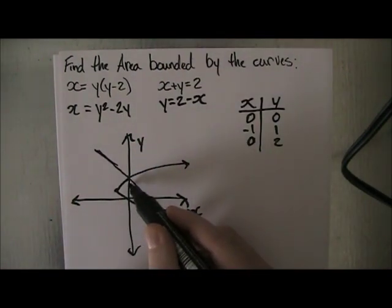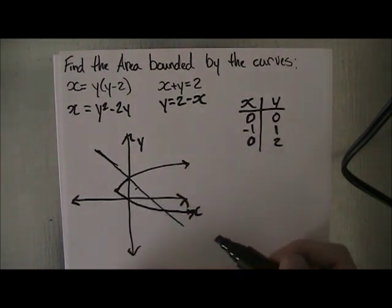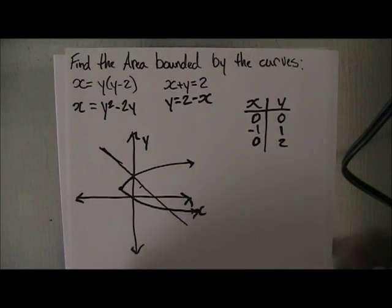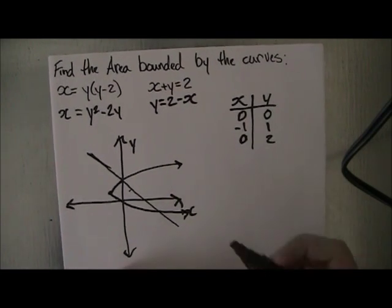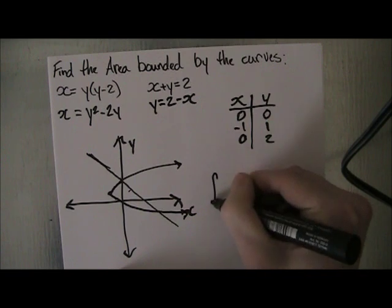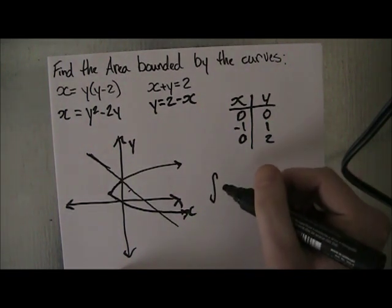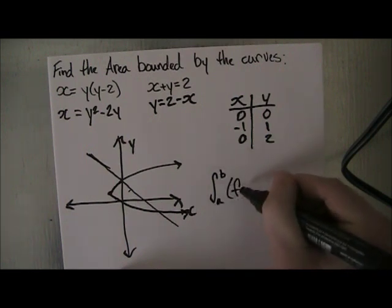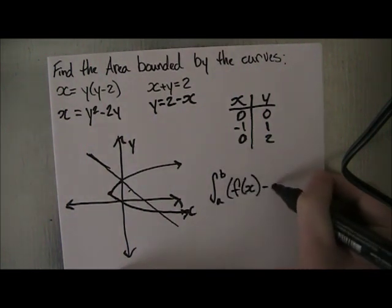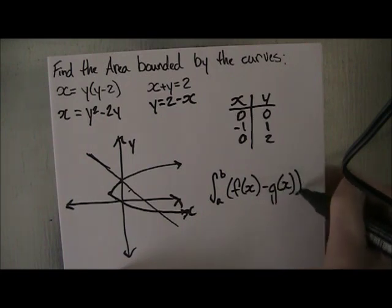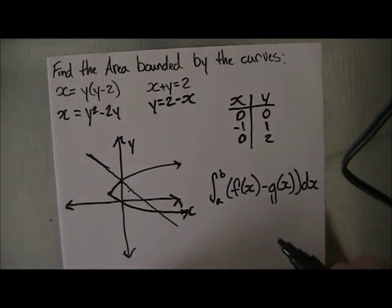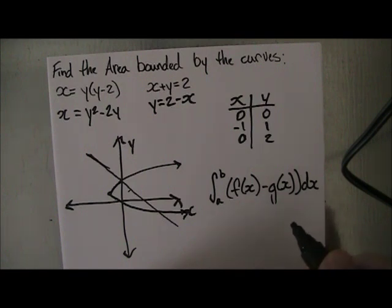Now we have a bounded area in here. So now we want to write out our formula for the area. We have the integral from a to b of f(x), which is our upper bound, minus g(x), our lower bound, times dx. The first thing we have to do is find out what is our upper function and what is our lower function.